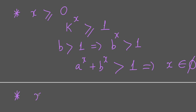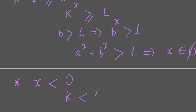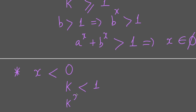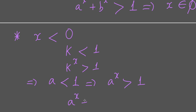Now we check the other case: x < 0. If x < 0, we have the property that if k < 1, then k^x > 1. Since a < 1, we have a^x > 1, so a^x + b^x > 1. Again, the equality cannot happen, so x belongs to the empty set again.